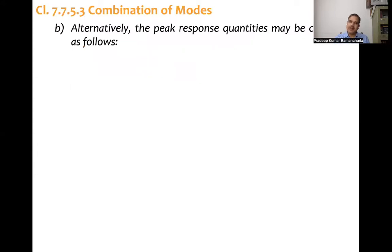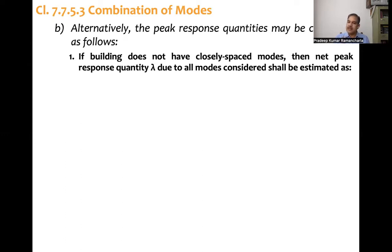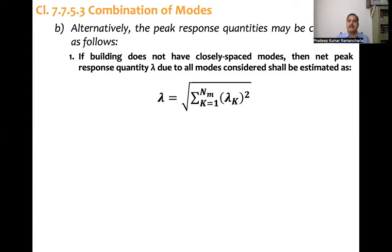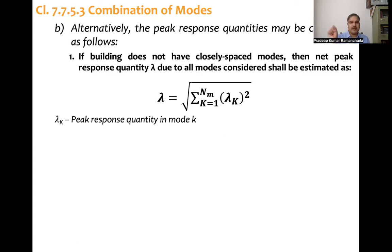Alternatively, the peak response quantities may be combined as follows. There are two conditions. Number one: if the building does not have closely spaced modes, then the net peak response quantity lambda due to all modes considered shall be estimated as lambda equal to the square root of the summation of lambda_k squared, from k equal to 1 to the number of modes. This is the square root of sum of squares (SRSS). Lambda_k is the peak response quantity in mode k - whether base reaction, story shear force, or displacement.